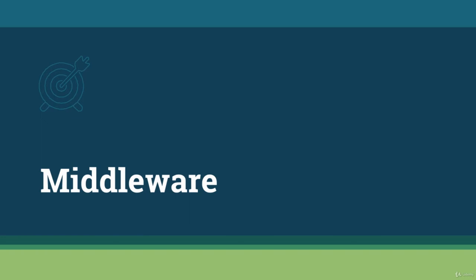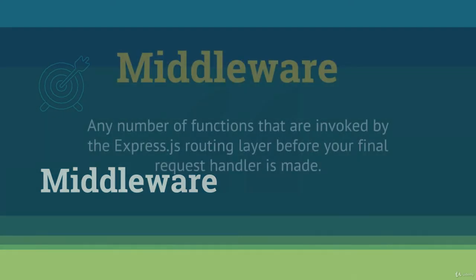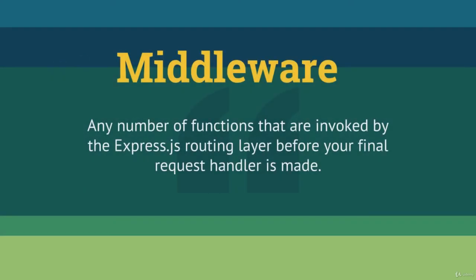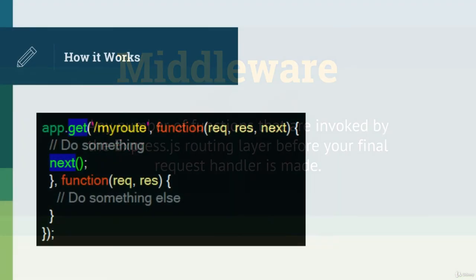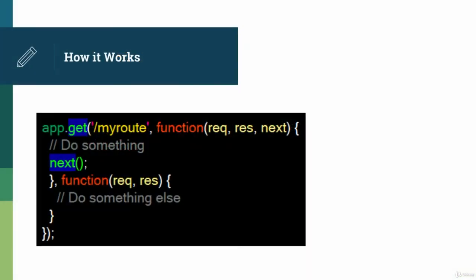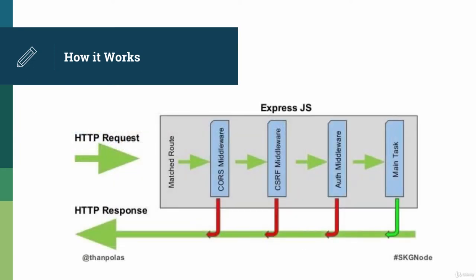In this video, we'll go into greater detail of what middleware really means and provide some examples. We can define middleware as any number of functions that are invoked by the Express.js routing layer before your final request handler is made. So essentially we're saying that on our defined route, do something first, then pass it along to the next function. Each time we will use the request and response objects of the HTTP cycle in order to alter, end, or pass to the next whatever it is that we're handling.